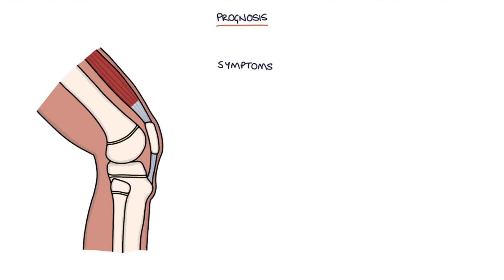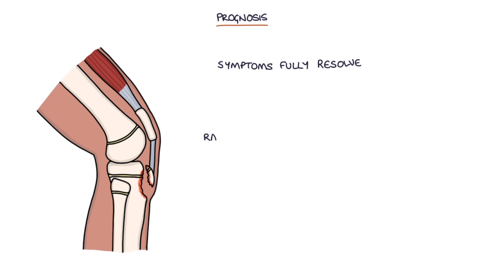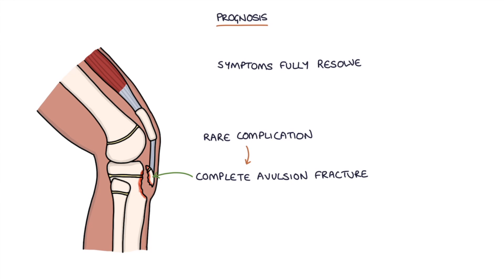Finally, let's talk about the prognosis. Symptoms will fully resolve with time; however, the patient will be left with a hard, bony lump on their knee. A rare complication is a complete avulsion fracture where the tibial tuberosity is separated from the rest of the tibia, and this requires surgical intervention.